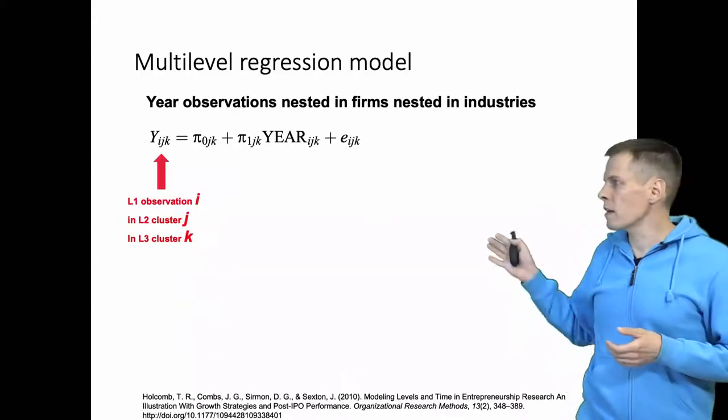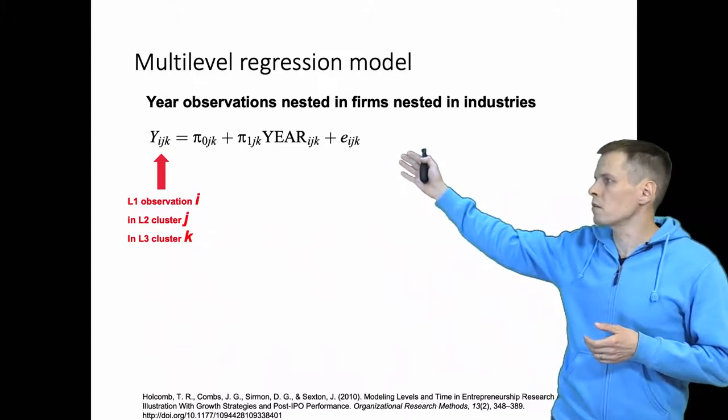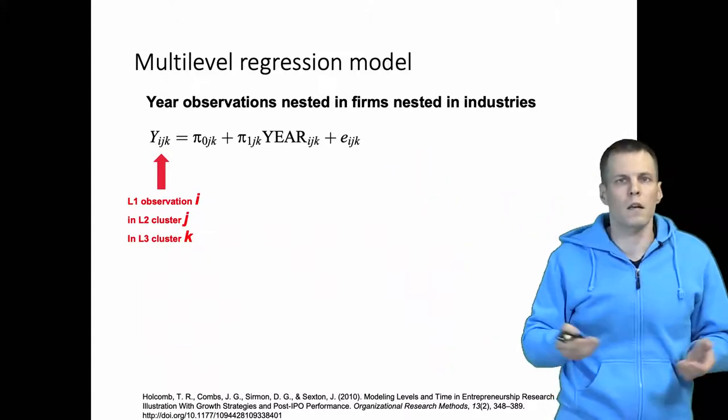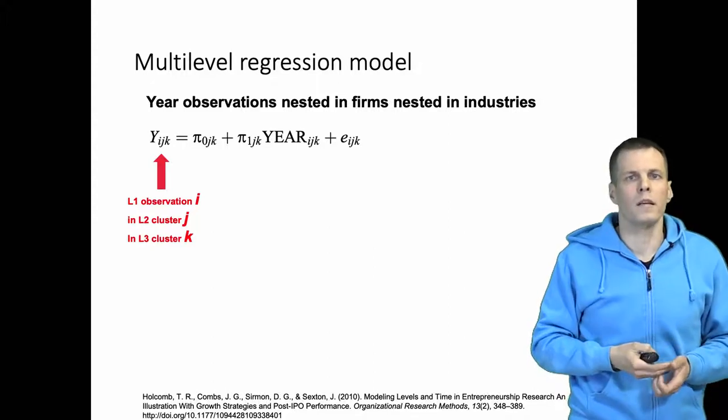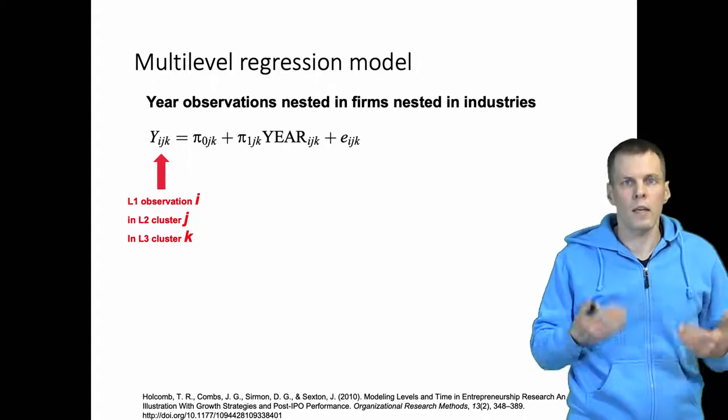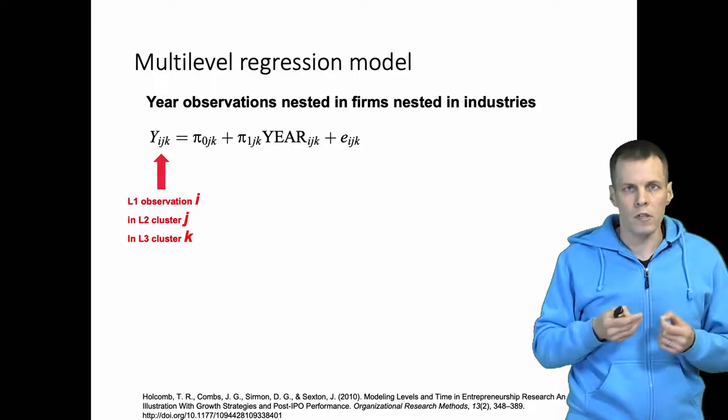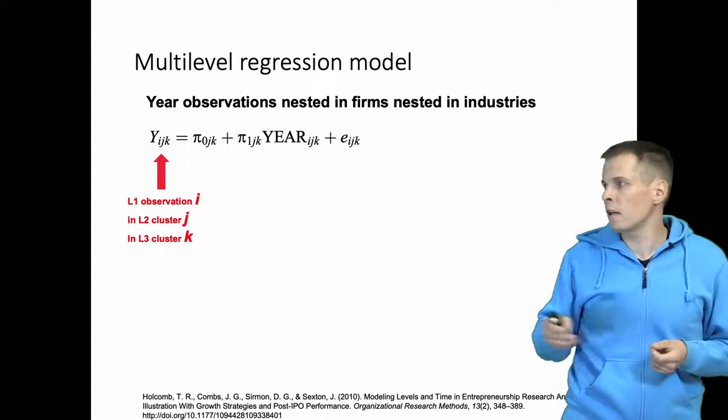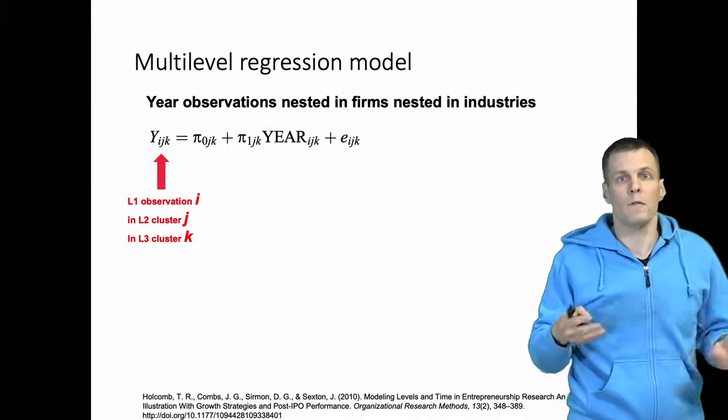The simplest model, the first year model, is just a linear time trend. So we say that there is a trend over time that is linear, either increasing or decreasing, and their interest is in estimating if this time trend varies between different kinds of companies.